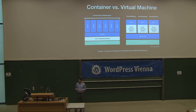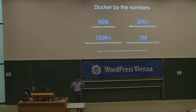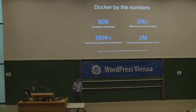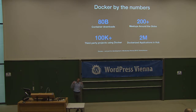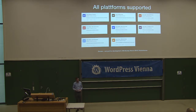Looking at Docker by the numbers: we have 80 billion container downloads, at least according to docker.com. There are over 200 community meetups, so if you'd like to get involved there should be one near you. There are over 100,000 third-party projects using Docker, and a lot of Dockerized applications available at Docker Hub. It's a good time to start using Docker because there's already a lot of information and community support available.